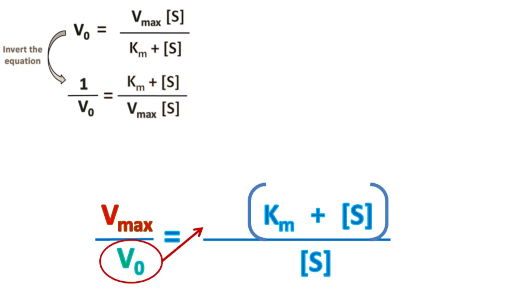Rearranging the equation, we get Vmax equals V0 into bracket Km plus S upon S.